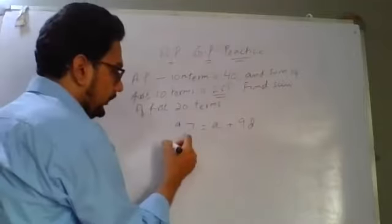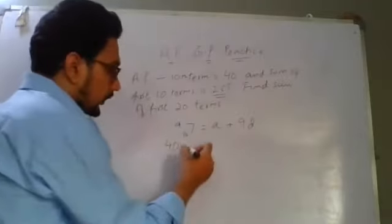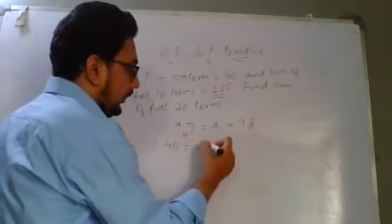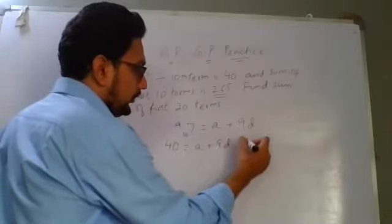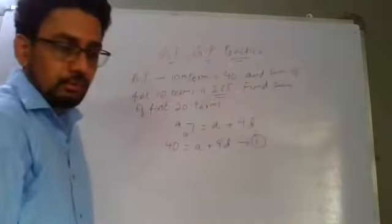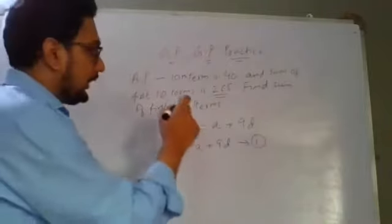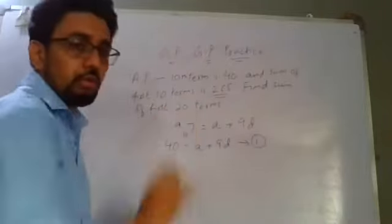The 10th term is 40. We are not aware with A. This is 9D, this is the first equation here. Now looking at the second equation, the sum of the first 10 terms is 265.